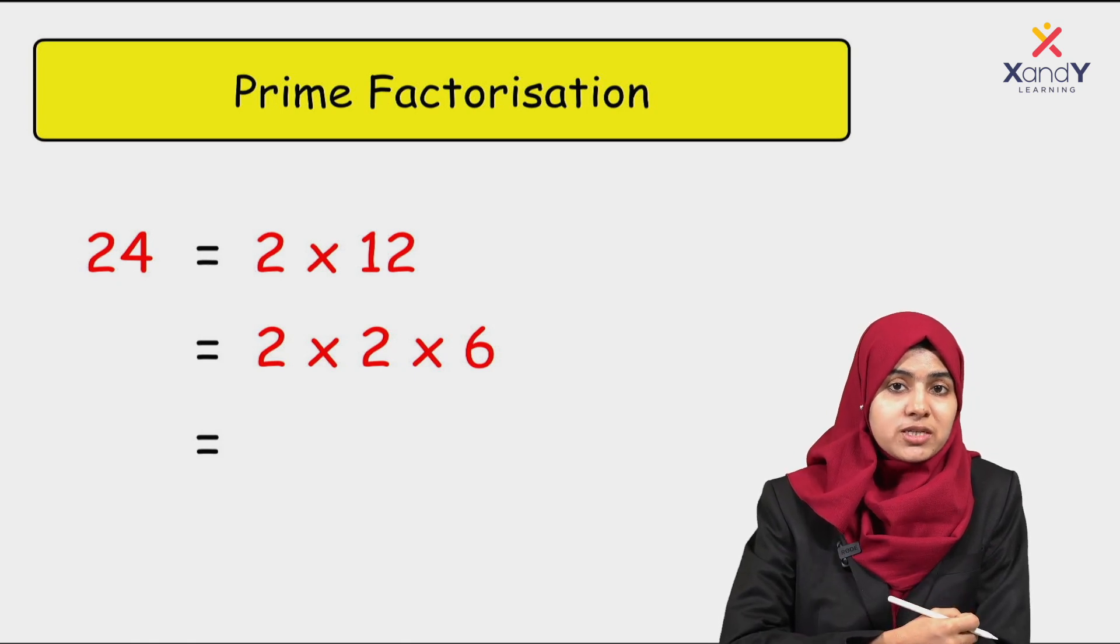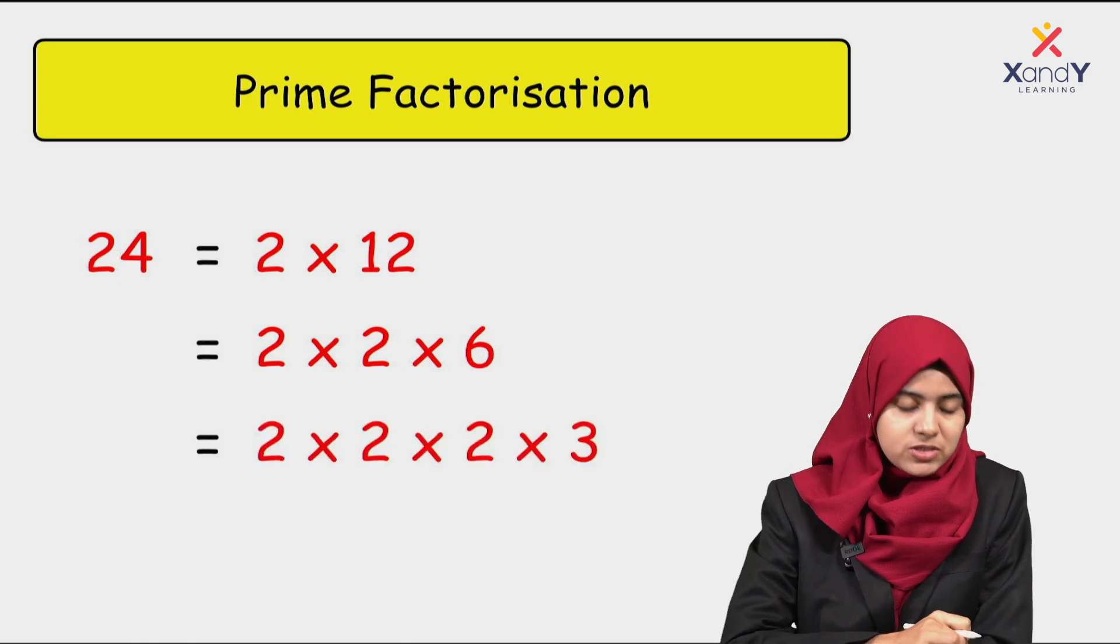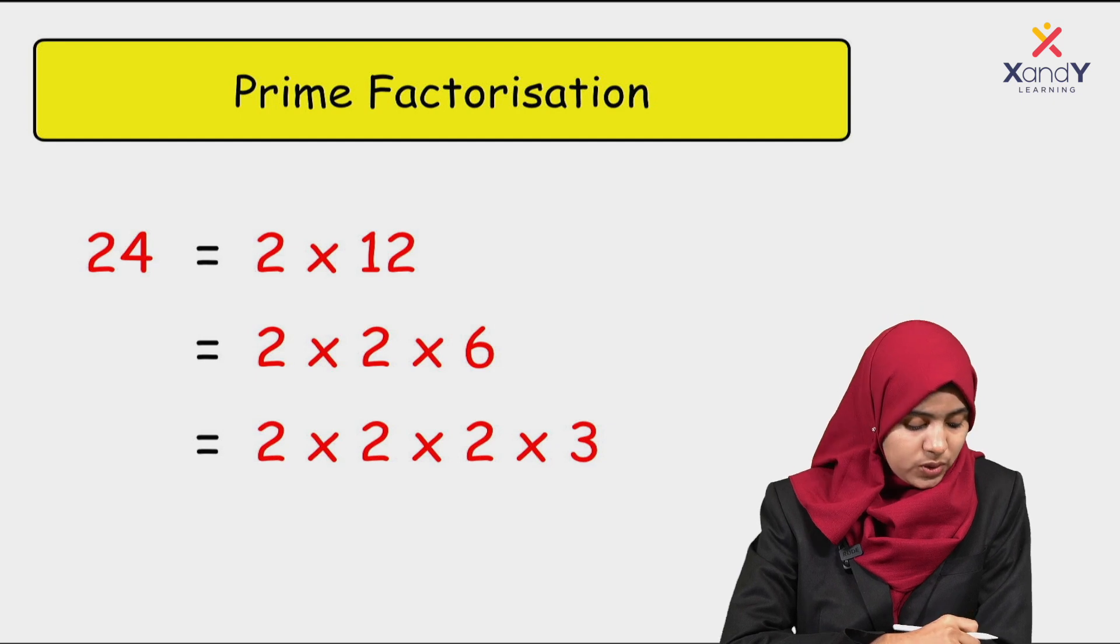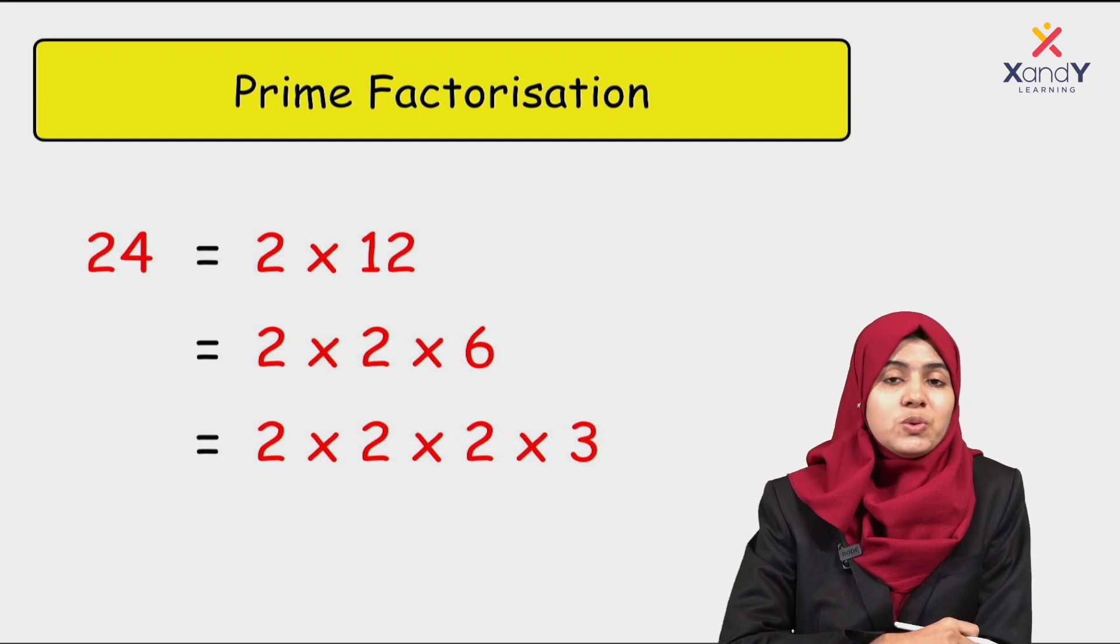Again, 6 we break down into 2 times 3. So 24 equals 2 times 2 times 2 times 3.